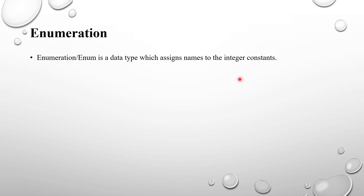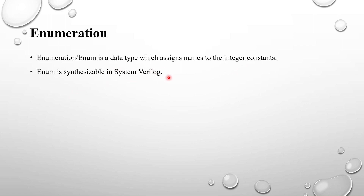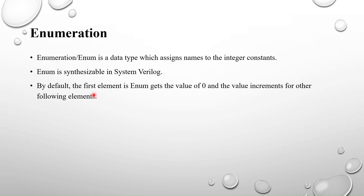It's not easy to write every state separately. With enumeration, we can insert all three states in a single enum, because it's a named value list. Enumerations make your code easier to understand and maintain compared to writing 2'b00 and so on. Enum is also synthesizable in SystemVerilog.